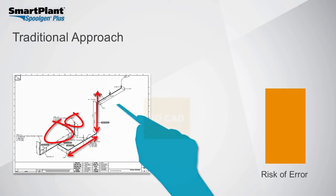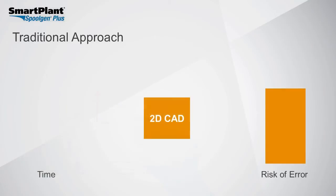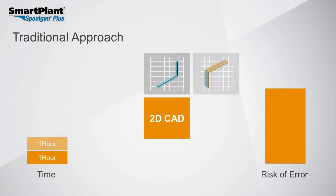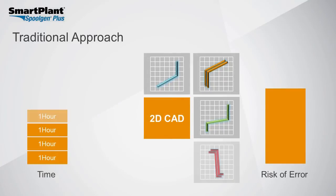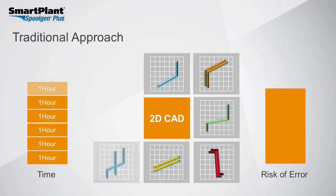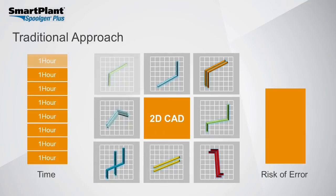The problems continue to grow when these manual markups are used to create new pipe spool drawings from the isometric. Typically, a 2D CAD system like AutoCAD, MicroStation, or SmartSketch is used, and the drafter must manually transfer the material from isometric to spool drawing. This must then be tracked separately from the isometric, increasing the opportunity for errors and requiring several hours of work per drawing.